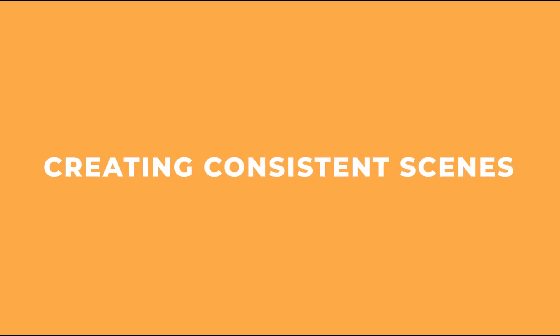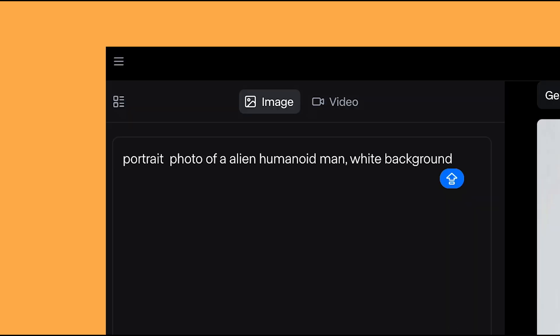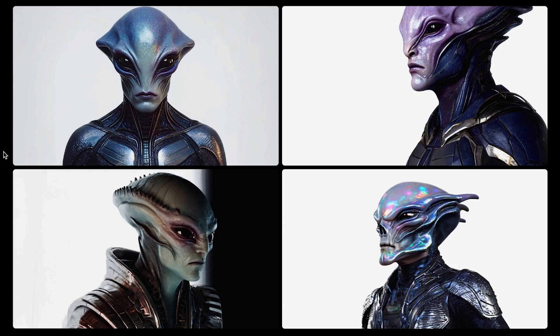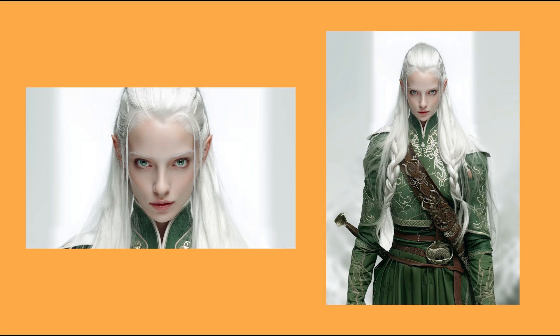Now let's have a look at creating consistent scenes. Say you have a character inside of an environment and you want to create believable, consistent scenes to tell a story. I'm going to use one of my custom made characters — an elven princess named Gwen. You can create your characters inside of Runway by typing in what kind of character you want. I've got a close up of her face and one with her face and more of her original costume. Using the image with her costume is good if you want to keep that costume consistent; otherwise, just use the close up of the face.